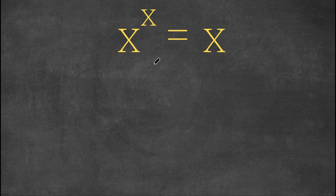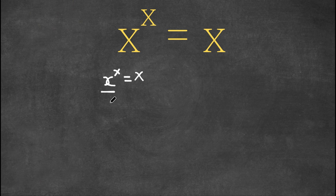What I'm first going to do is divide by x on both sides. So we have x to the power of x equals x, and if I divide by x on both sides, on the right side, x divided by x is simply 1, because anything divided by itself is 1.